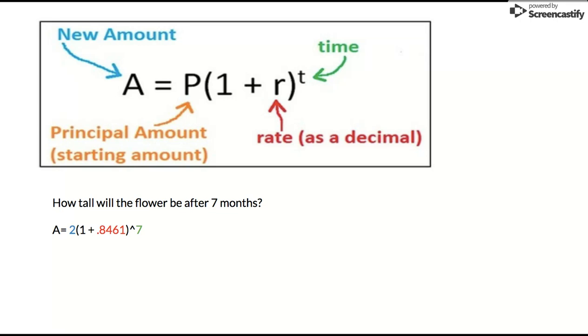So if we say how tall would this flower be after 7 months, we want to find the new amount after 7 months. We keep A alone equals 2 (which is your principal amount) parentheses 1 plus your growth factor which is 0.8461 close parentheses to the 7, so we want to find it after 7 months.